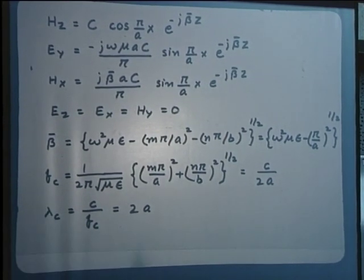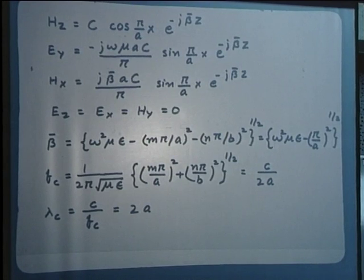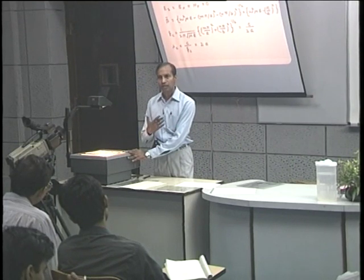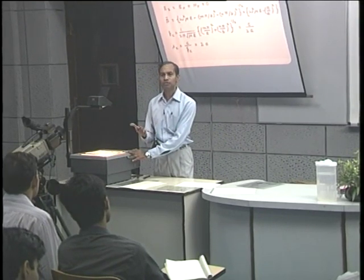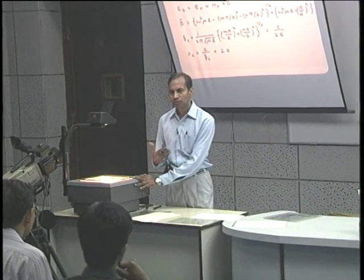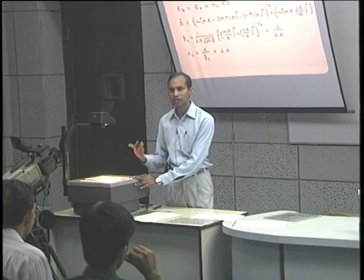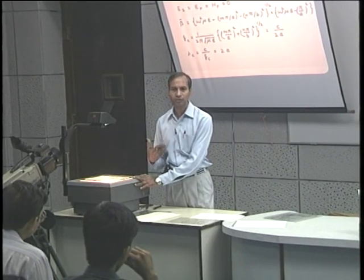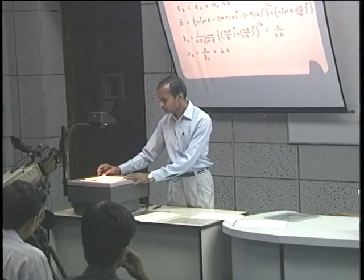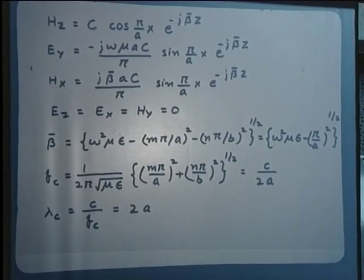Apart from the phase shift constant, cutoff frequency, and cutoff wavelength, we would also like to visualize the field lines. The field lines play a very important role in the utilization of the waveguide. We use the waveguide for transmission of signals and also try to condition the signal as it propagates — for example, changing the signal level, measuring frequency or wavelength, changing the phase, and exciting modes. All these things depend upon the kind of field configuration the waveguide supports for this particular mode.